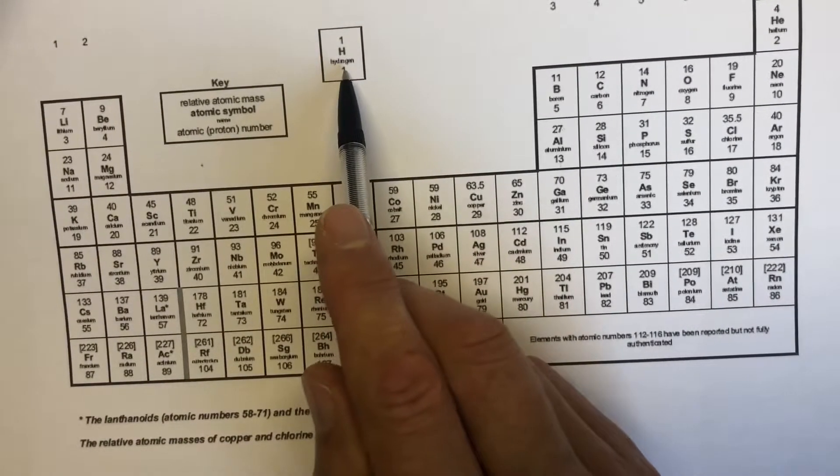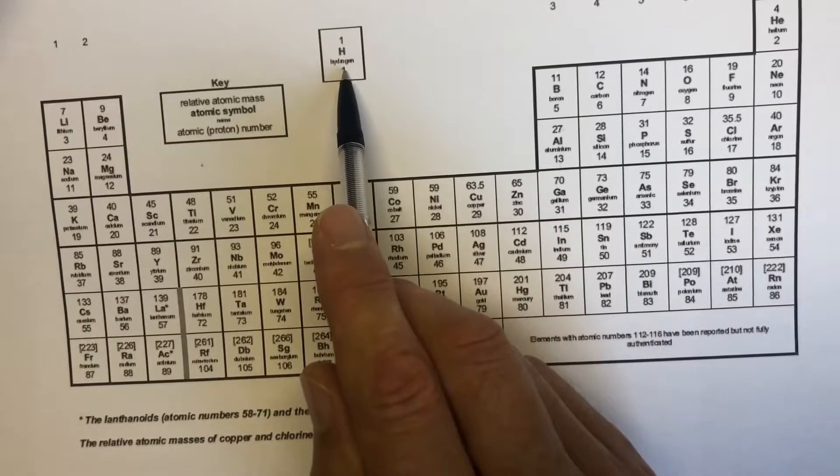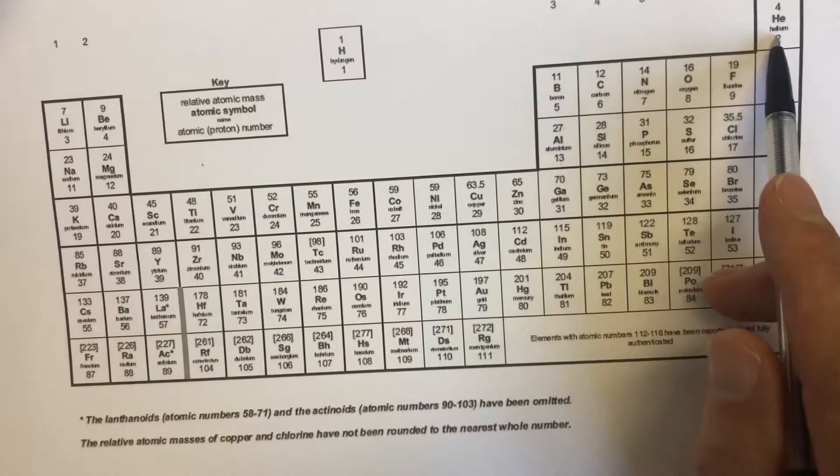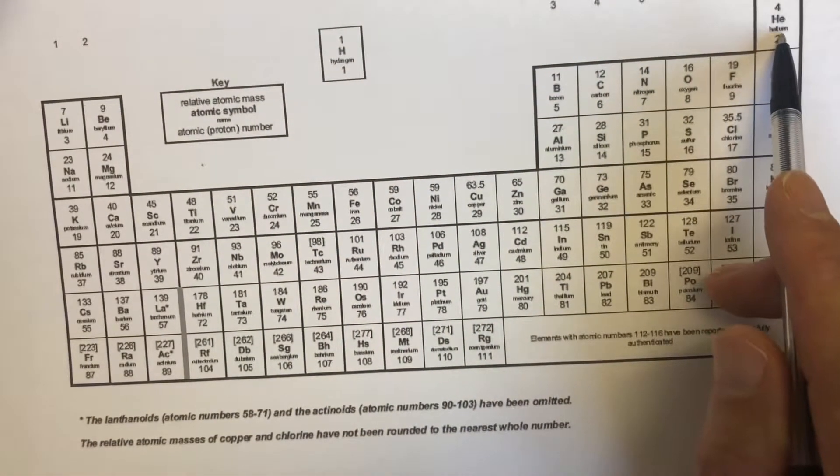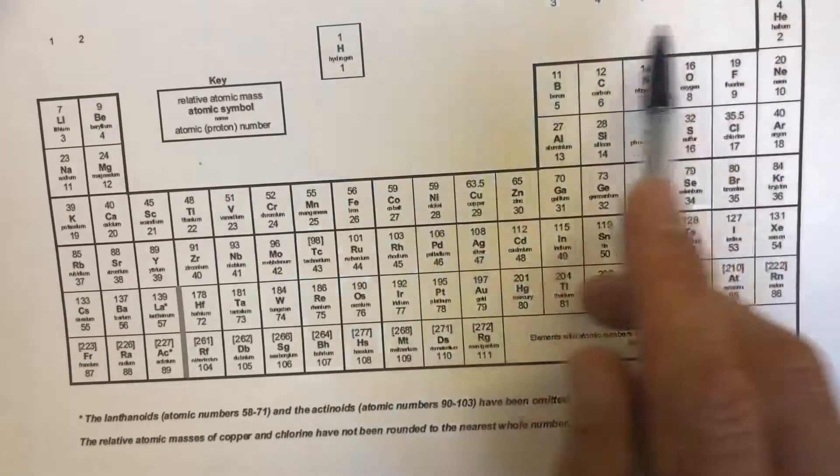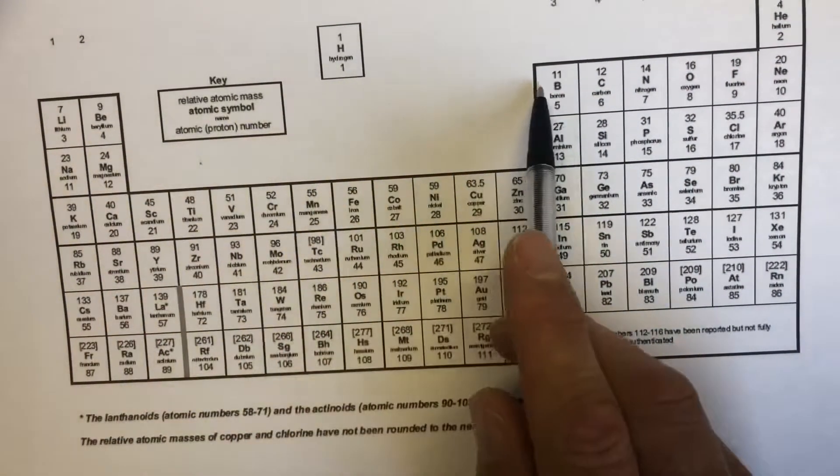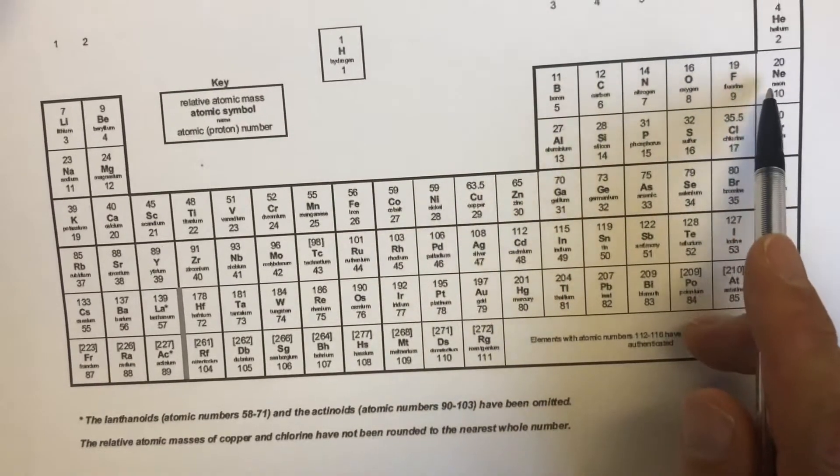The periodic table reads like a book. We read left to right, so if we go right from here we get to element number two, helium, and then we get to the end of the row so we go to the next row on the left hand side. That's lithium, then beryllium, boron, carbon, nitrogen, oxygen, fluorine and neon.